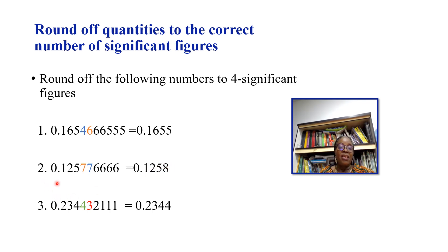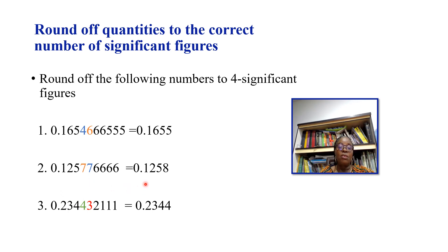For 0.125776666, rounding to 4 significant figures: count 1, 2, 5, 7 — the next digit is 7, which is greater than 5, so we round up: 7 becomes 8. The answer is 0.1258.